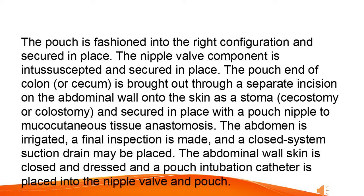The pouch end of colon, or cecum, is brought out through a separate incision on the abdominal wall onto the skin as a stoma — cecostomy or colostomy — and secured in place with a pouch nipple to mucocutaneous tissue anastomosis. The abdomen is irrigated, a final inspection is made, and a closed system suction drain may be placed. The abdominal wall skin is closed and dressed and a pouch intubation catheter is placed into the nipple valve and pouch.